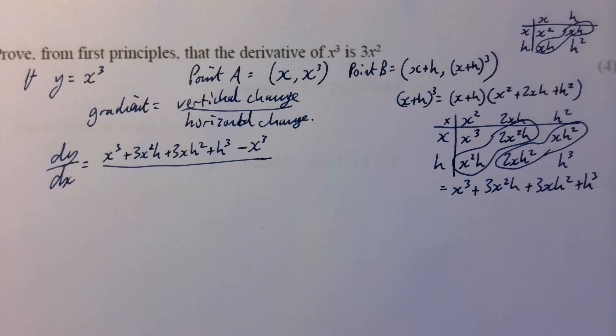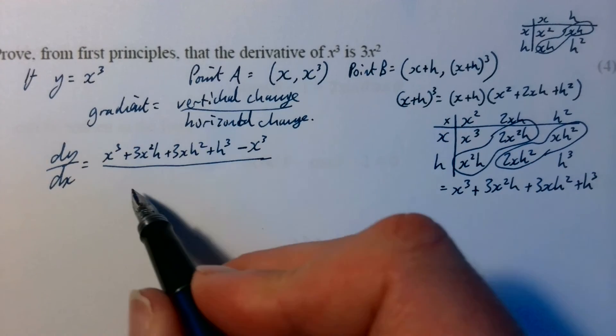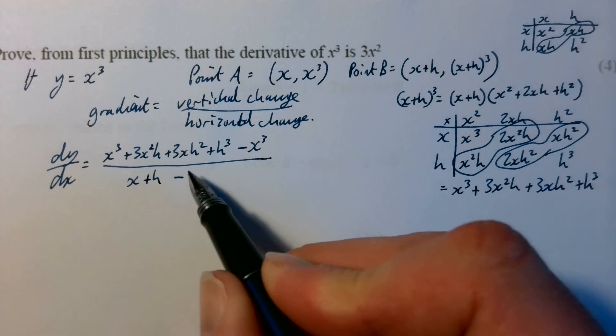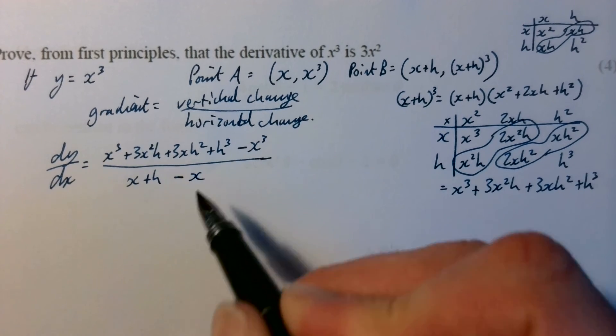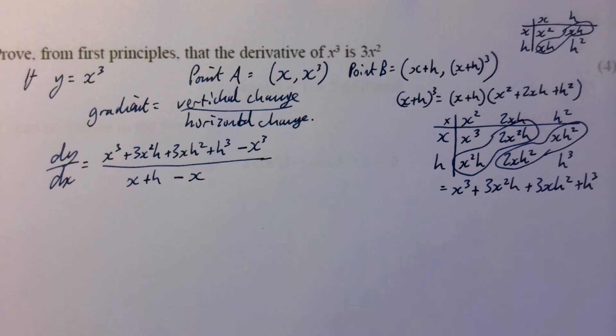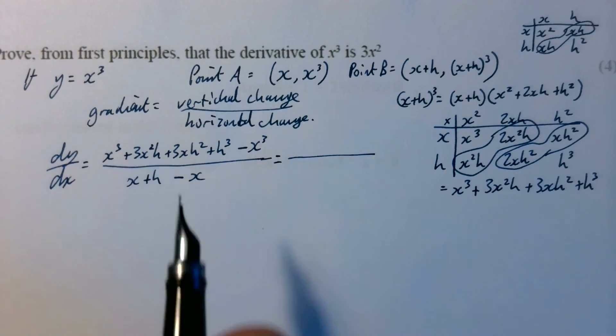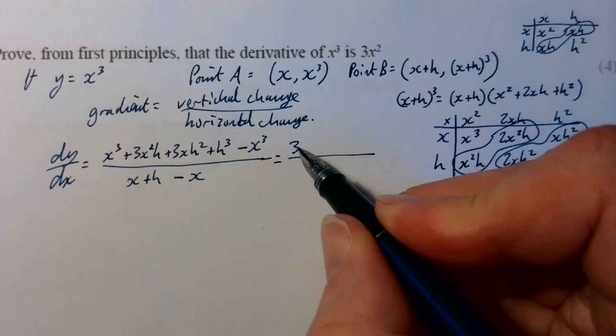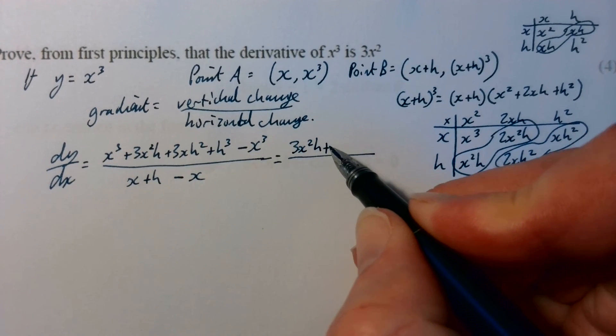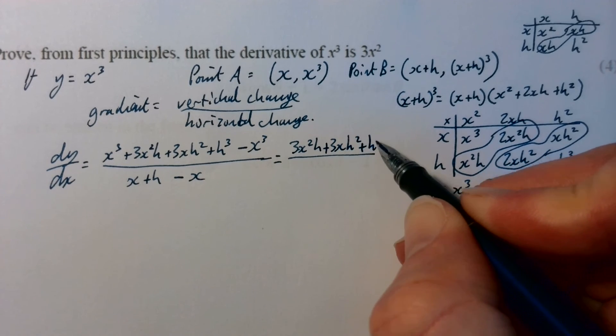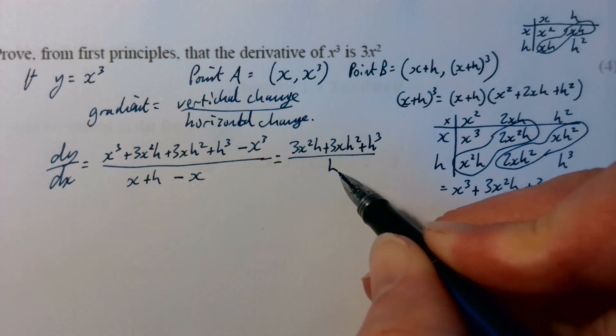And on the bottom, much simpler, you've got point B's x coordinate being x plus h and point A's being x, so we take that away. What that's going to give us is, well, the x cubed disappear, so 3x squared h plus 3xh squared plus h cubed all over h.